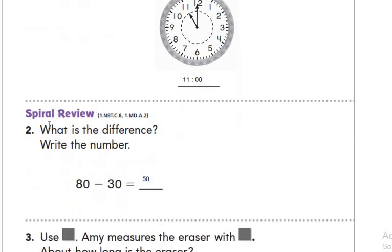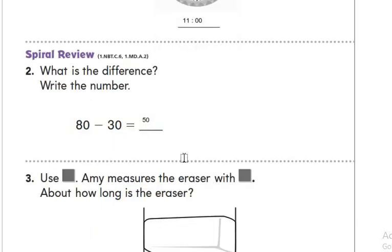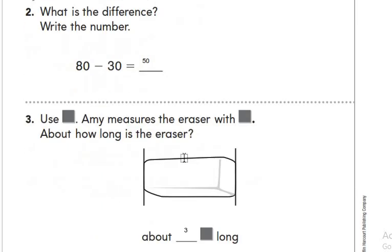Number 2 — what is the difference? Write the number. We subtract the ones first: 0 minus 0 equals 0. Then we subtract the tens: 8 minus 3 equals 5. So the final answer will be 50.